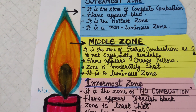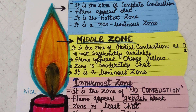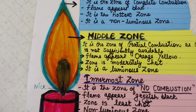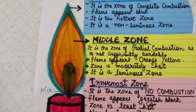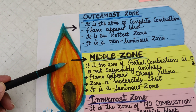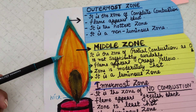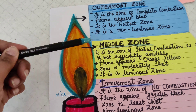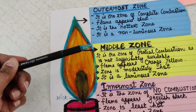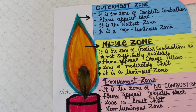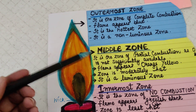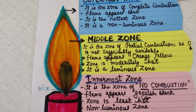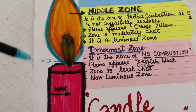Coming inside, we find the middle zone, which has partial combustion. Here, the oxygen supply is not sufficiently good - insufficient oxygen means the combustion of fuel is quite low. This is the incomplete combustion zone. When combustion is incomplete with poor oxygen supply, the color becomes orange or yellow. It is moderately hot and is a luminous zone.